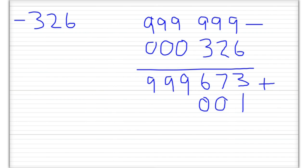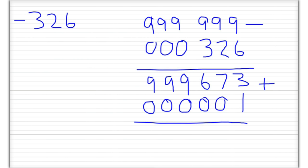To represent minus 326 using tens complement, all we need to do is add one to the nines complement, giving us 9999674. So we've represented minus 326 as 9999673 using nines complement, or 9999674 using tens complement. If we take the tens complement of the tens complement of 326, we should get back to 326.